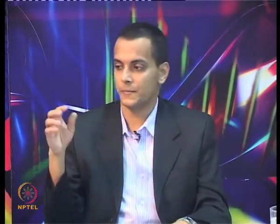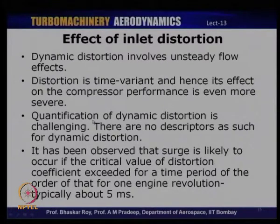Radial distortion occurs even otherwise because of boundary layer development at the hub and casing. Dynamic distortion is basically the effect of unsteadiness on a steady distortion. Dynamic distortion can have far more severe effects on compressor performance. There are no real descriptors for dynamic distortion, but surge is likely to occur if the critical value of distortion coefficient is exceeded for a time period of the order of one engine revolution, typically about 5 milliseconds.